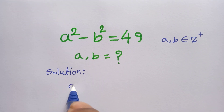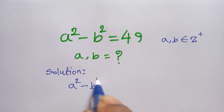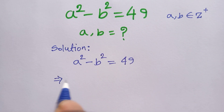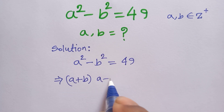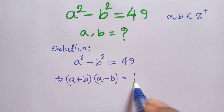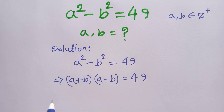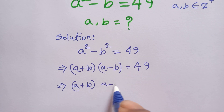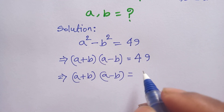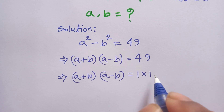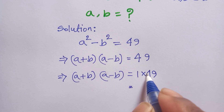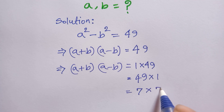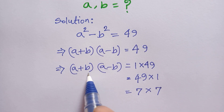We have given a squared minus b squared is equal to 49. We know a squared minus b squared is equal to a plus b times a minus b, and this equals 49. So a plus b times a minus b equals 49, which can be written as 1 times 49, or 49 times 1, or 7 times 7.